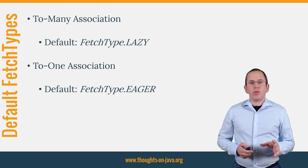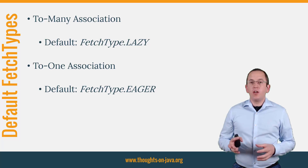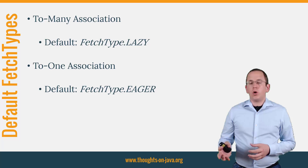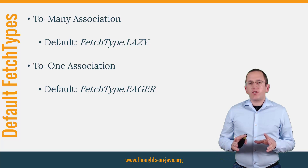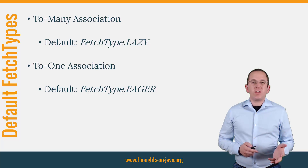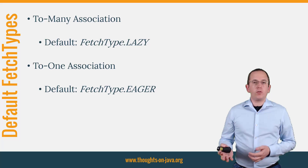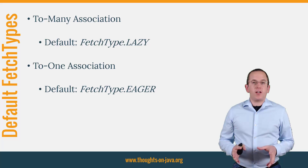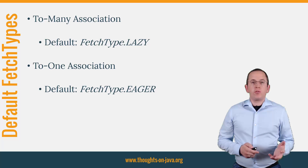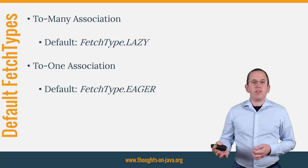When you start with Hibernate, you most likely either didn't know about FetchTypes or you were told to always use FetchType Lazy. In general, that's a good recommendation. But what does it exactly mean, and what is the default if you don't define the FetchType? The default depends on the cardinality of the relationship — all to-one relationships use FetchType Eager, and all to-many relationships use FetchType Lazy.